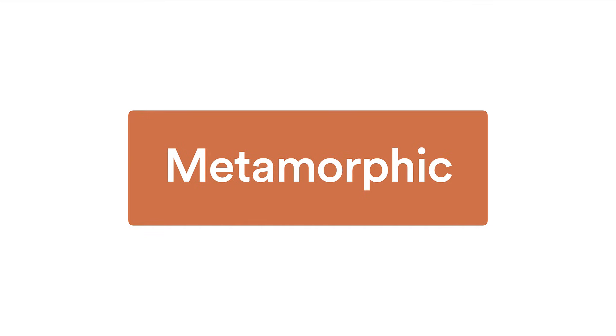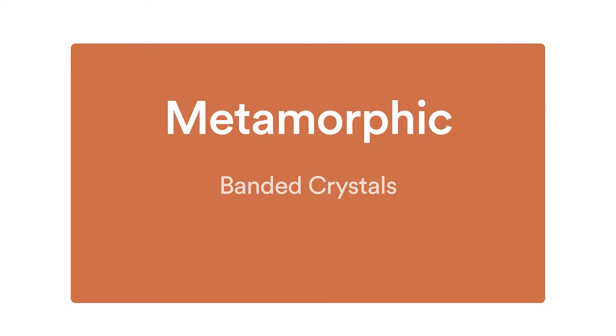Finally, metamorphic rocks. These are pretty tricky to identify, and a lot of them might give you a false igneous identification. The one key thing to look for with metamorphic rocks will be banded crystals — different, often distorted bands of crystals throughout, which are the result of the intense heat and pressure that cause metamorphism.